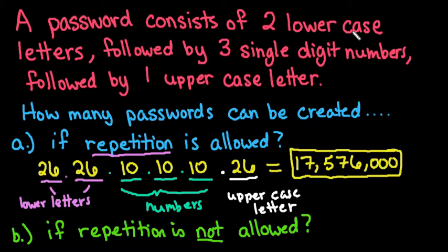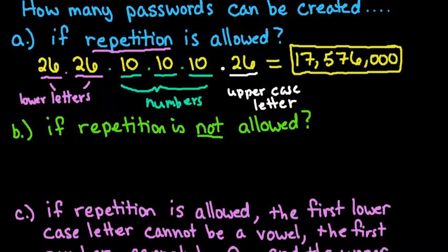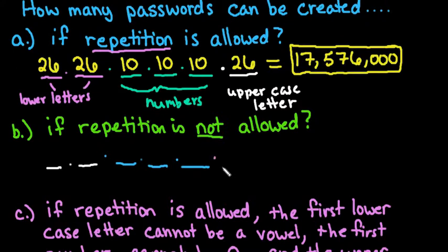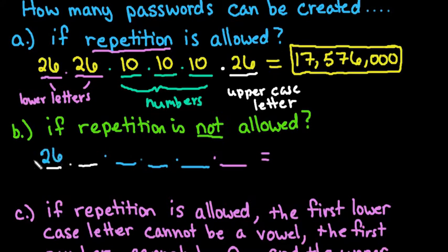So there are 17,576,000 passwords consisting of two lowercase letters followed by three single-digit numbers followed by one uppercase letter where repetition is allowed. For the next case, the pattern is the same — two lowercase letters, three numbers, one uppercase letter — but this time repetition is not allowed. Since the uppercase letter is independent of the lowercase letters, a lowercase M and an uppercase M are considered different.